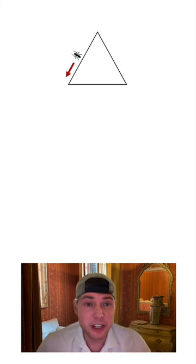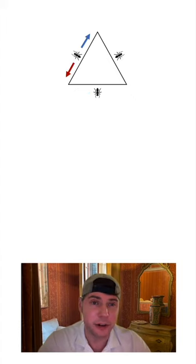We have a triangle and an ant on the triangle. There's a 50% chance the ant goes this direction and continues this way around the triangle, or a 50% chance that it goes this way and continues around the triangle. Let's introduce two more ants, and each of them have a 50% chance of going either direction around the triangle.